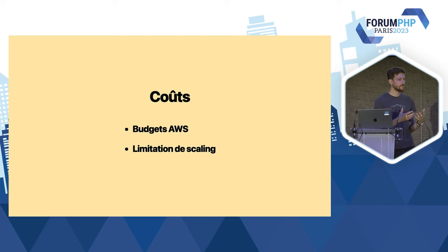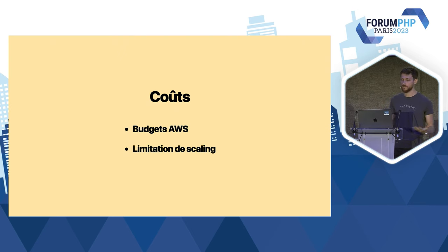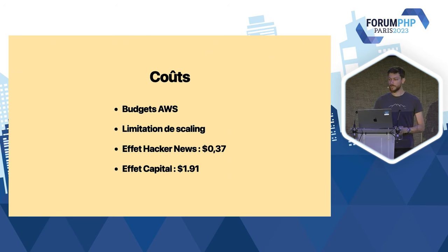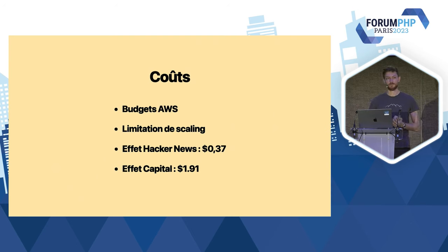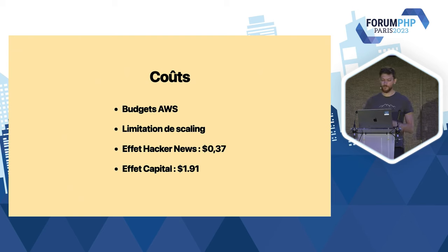Pour les pics de trafic imprévus légitimes — on passe sur Hacker News, l'effet capital — j'ai essayé de chercher des chiffres sur combien de requêtes on prend. Je suis tombé sur des coûts : sur la partie exécution du code et HTTP, pas la base de données, les coûts sont assez raisonnables. Je suis tombé sur des chiffres de 40 000 visiteurs simultanés, 2 millions de requêtes. Même si c'était un facteur x10, on voit qu'on serait sur une vingtaine de dollars sur l'effet capital. Ça reste des coûts qui sont assez acceptables pour ce genre de pic de trafic.